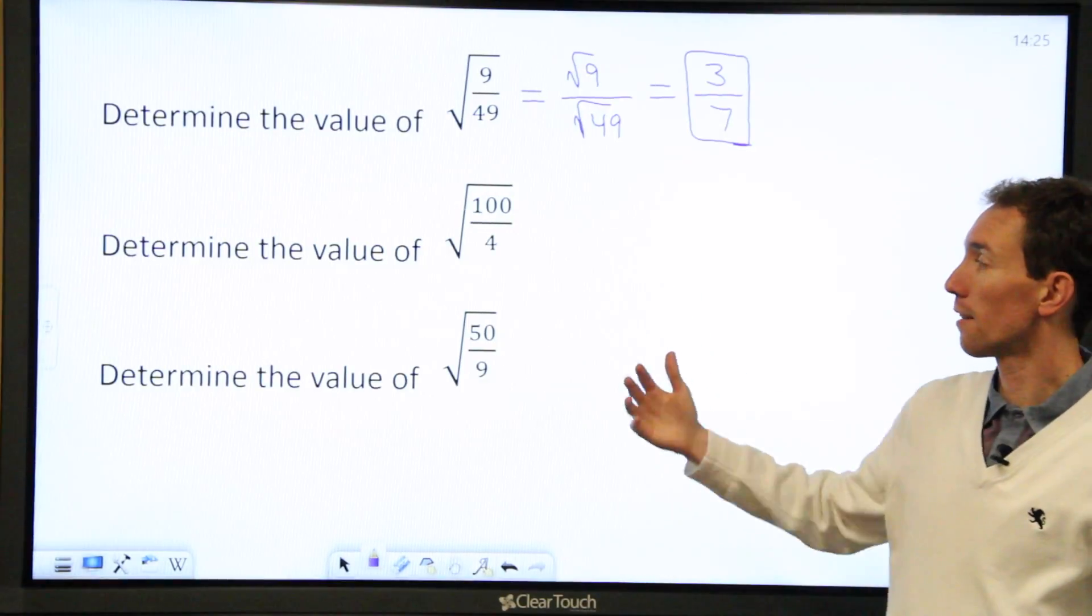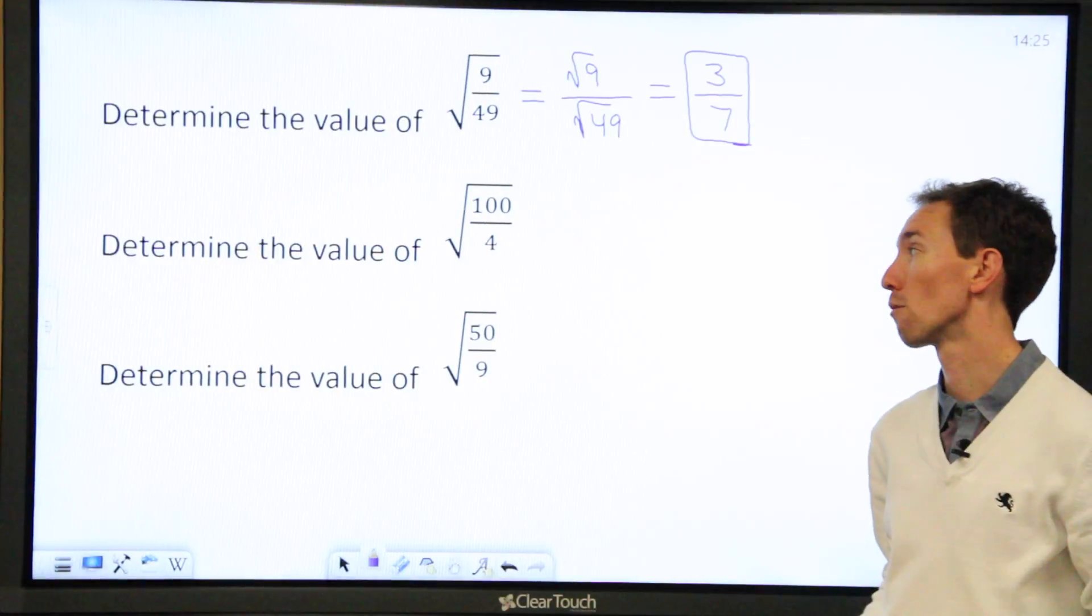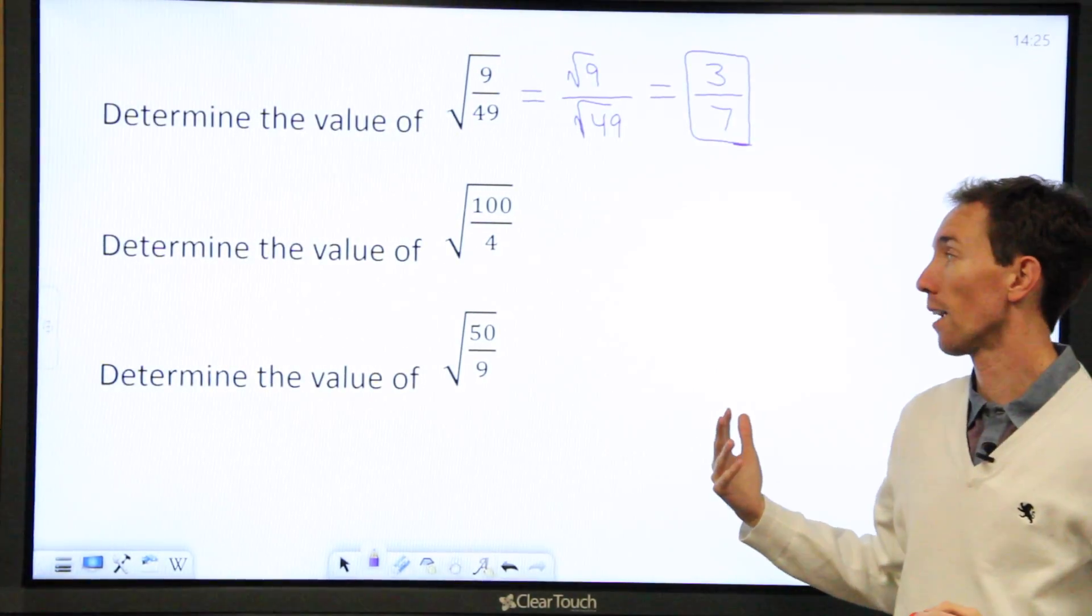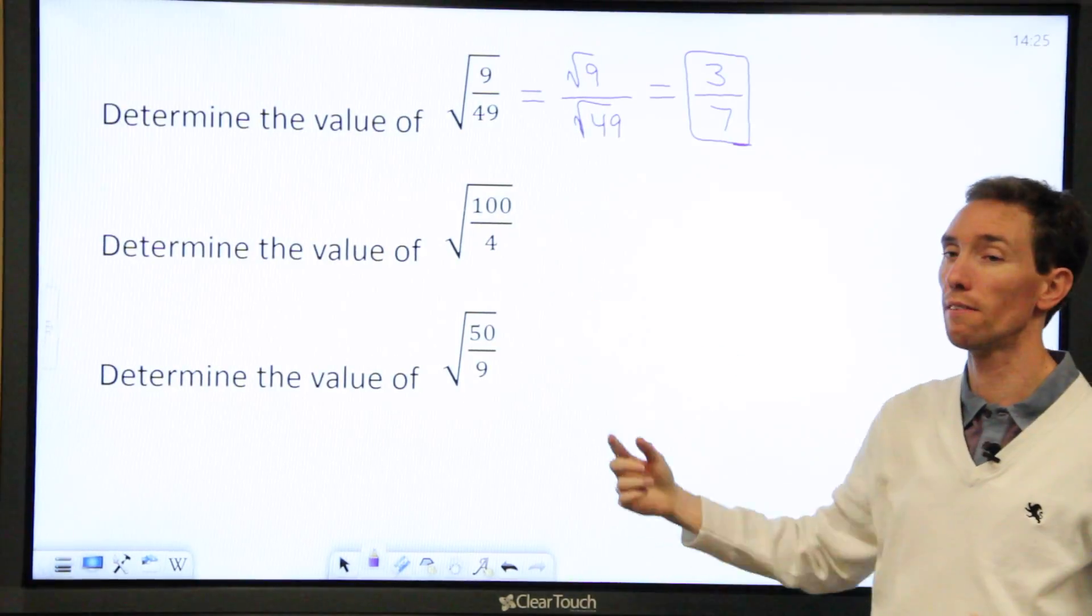So let's try the middle one. It says determine the value of the square root of 100 divided by 4. Now with this one, there's something that I noticed right away, is that I can actually take and divide 100 divided by 4.